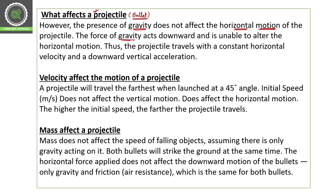But the force of gravity acts on the bullet and acts downward, and it is unable to alter the horizontal motion. When it doesn't affect the horizontal motion, it cannot change it. But of course the velocity of the bullet must change, and when the velocity changes it will lower over a period of time. Thus the projectile travels with a constant horizontal velocity and downward vertical acceleration.